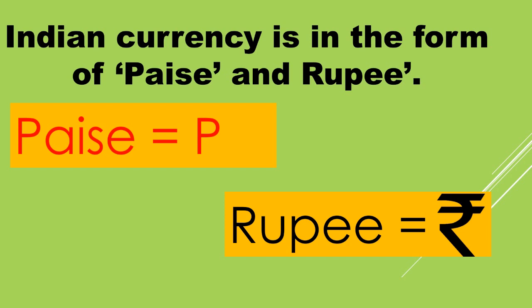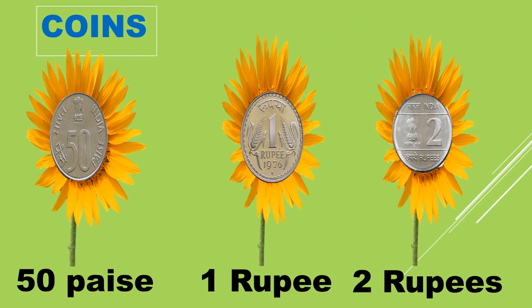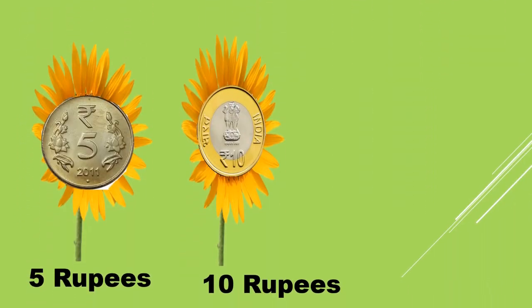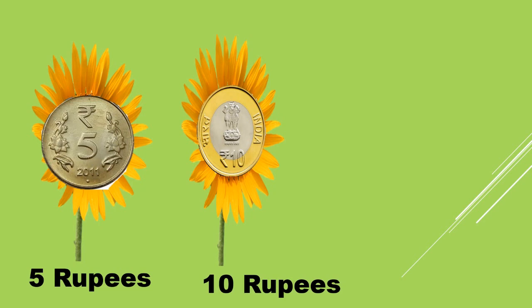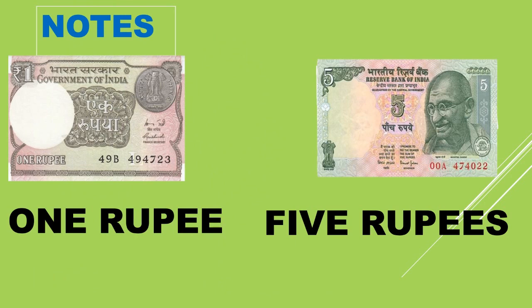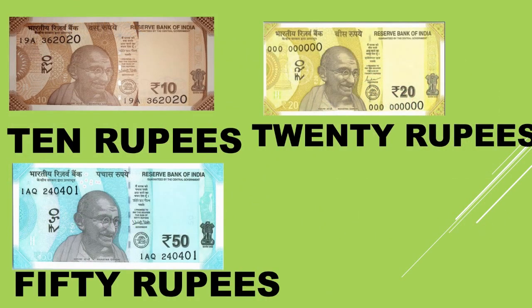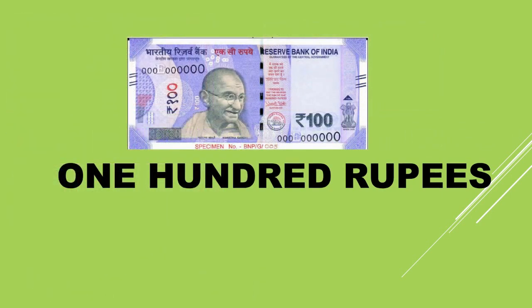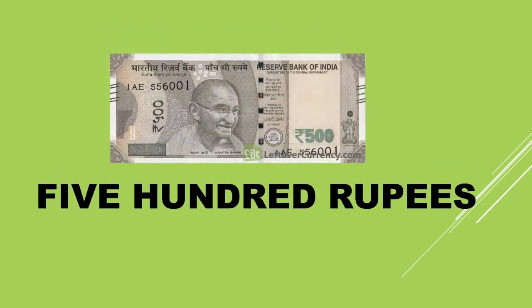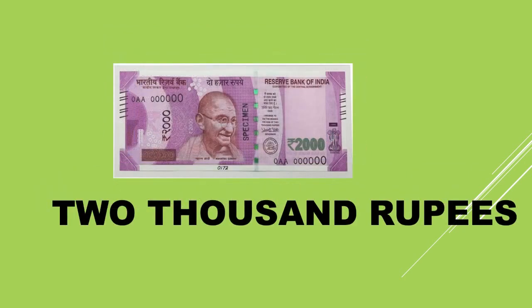Indian currency is in the form of paise and rupee. Paise is denoted with 'p' and rupee is denoted with the rupee symbol. Look at these coins — have you ever seen these coins? These coins are used all over India. The coins are: 50 paise, 1 rupee, 2 rupees, 5 rupees, 10 rupees. The currency notes in India are: 1 rupee, 5 rupees, 10 rupees, 20 rupees, 50 rupees, 100 rupees, 200 rupees, 500 rupees, and 2000 rupees.